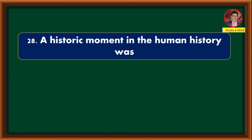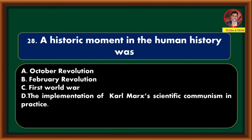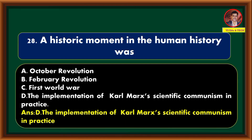A historic moment in human history was — October Revolution; February Revolution; First World War; the implementation of Karl Marx's scientific communism in practice. Correct answer is option D: the implementation of Karl Marx's scientific communism in practice.